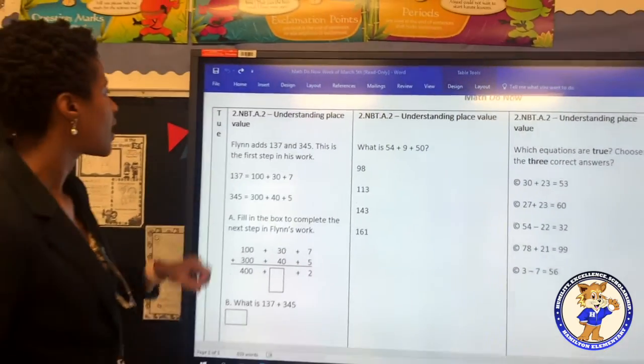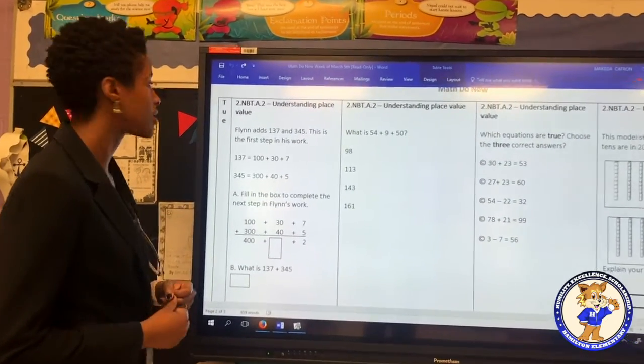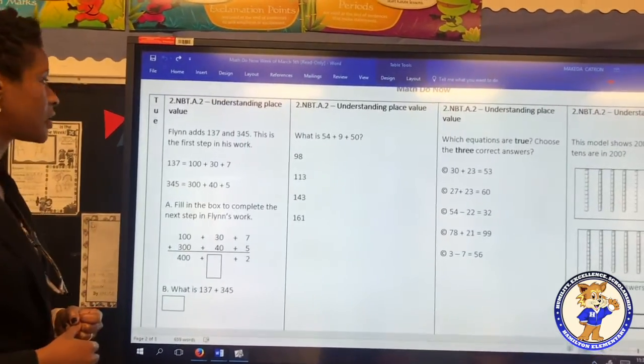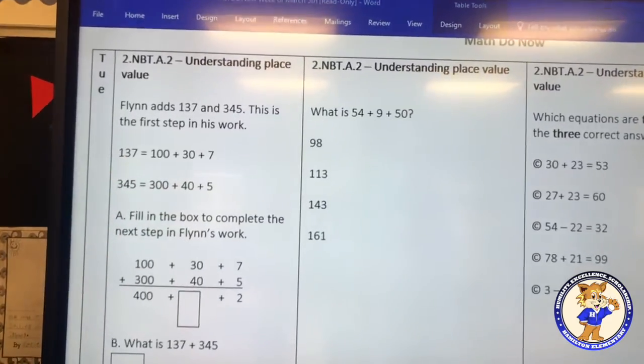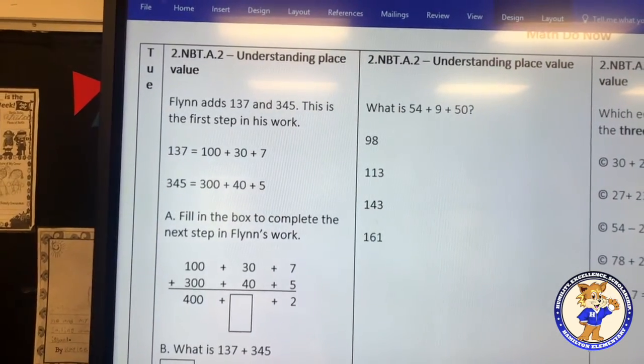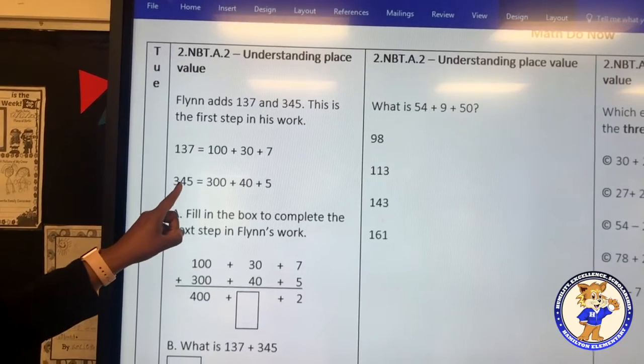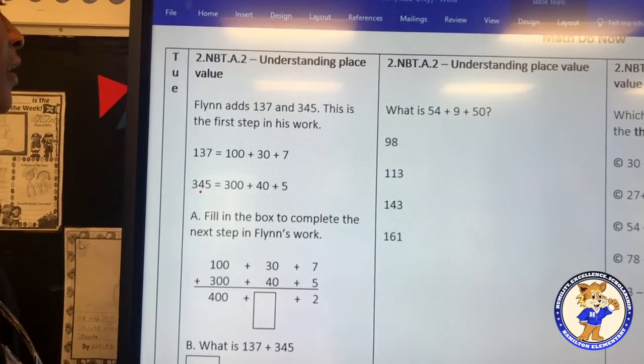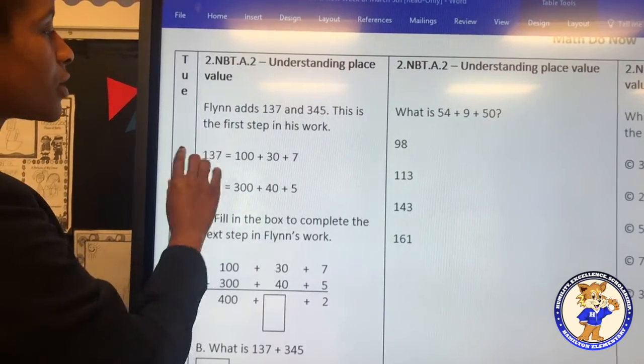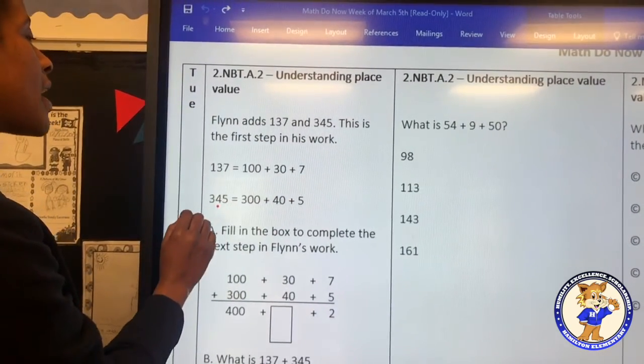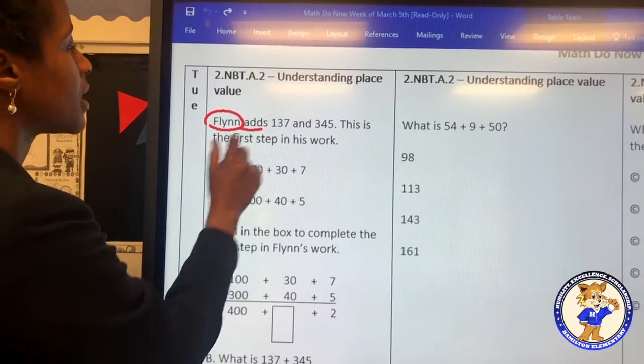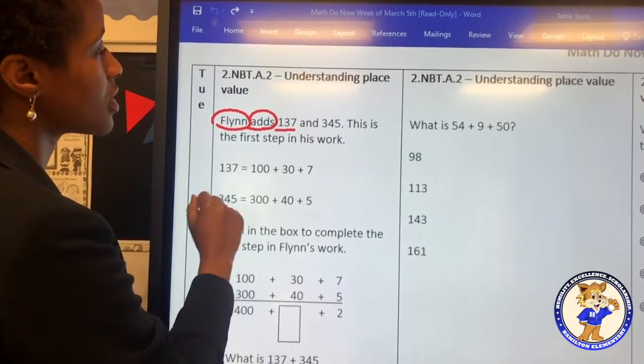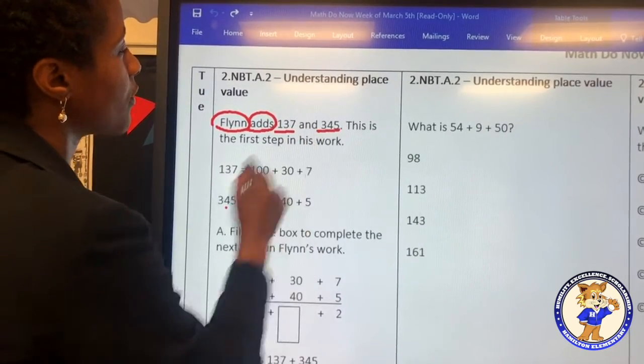I'll read. Flynn adds 137 and 345. This is the first step in his work. 137 equals 100 plus 30 plus 7. 345 equals 300 plus 40 plus 5. And what I understand from this first part of the problem is that Flynn is going to be adding some numbers. And the numbers that he will be adding are 137 and the number 345.